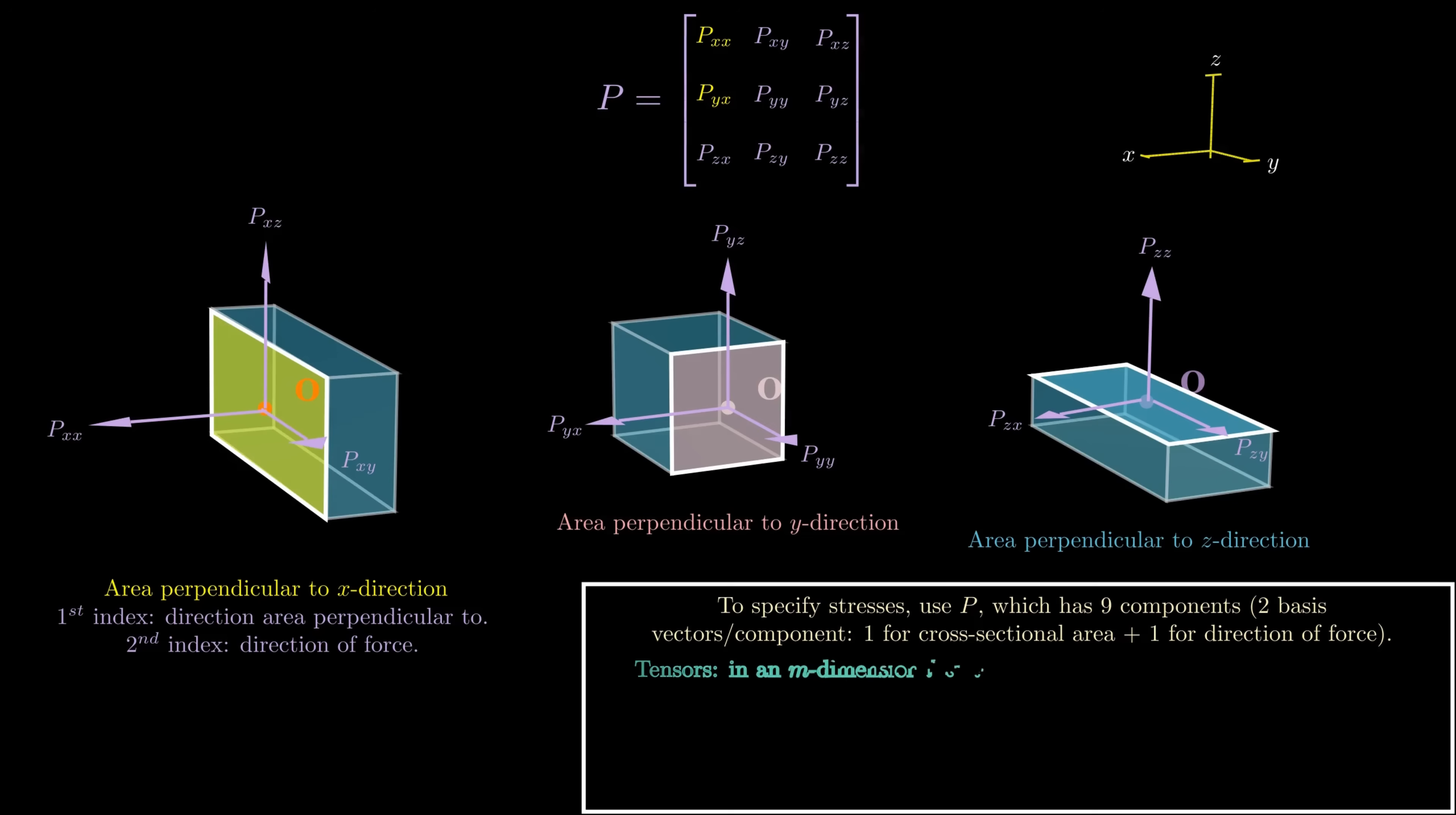If we're in an m-dimensional space, a tensor of rank n is a mathematical object that has n indices, m to the power n components, and obeys certain transformation rules. In the examples we talked about, we were dealing with a three-dimensional space, and in most cases that's what we'll be dealing with, a three-dimensional space. One exception is general relativity, where we'll be dealing with a four-dimensional space, with time being an additional dimension. What about the rank of the tensor? Well, you can think of the rank of a tensor as the number of basis vectors you need in order to fully specify a component of the tensor.